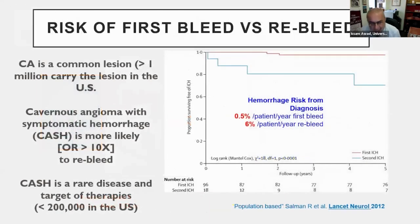A lesion that had never bled before is relatively common in the general population — more than a million patients carry a cavernous angioma in their brain in the United States. However, once a lesion has had a single symptomatic hemorrhage, we call it CASH — cavernous angioma with symptomatic hemorrhage. That's where the money is: it is tenfold or more likely to re-bleed. Hence this lesion is a target for therapeutic development to prevent re-bleeding. CASH is a rare disease affecting less than 200,000 patients in the United States.